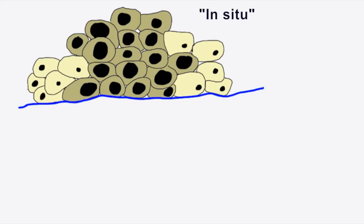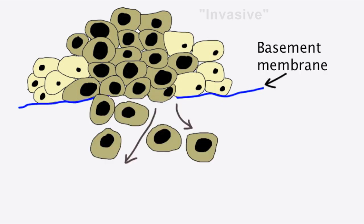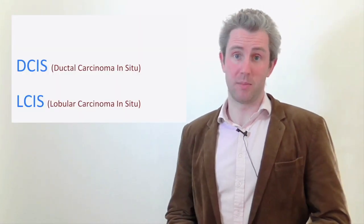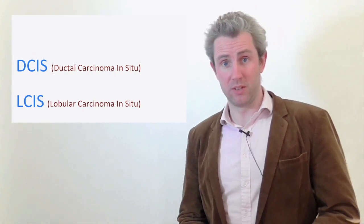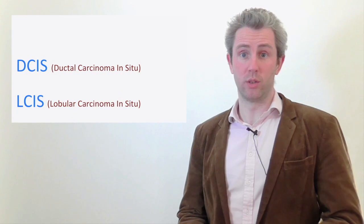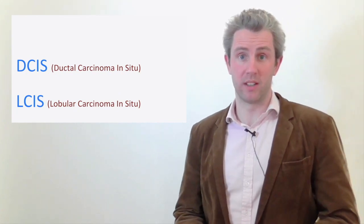After biopsy, the malignant lesion can either be in situ or invasive. An in situ carcinoma is contained within an intact epithelial basement membrane. An invasive carcinoma means that the cancer cells have gone beyond the basement membrane and therefore have the potential to get into the lymphatics and vasculature. The in situ carcinomas can be divided up into ductal and lobular subtypes. Ductal carcinoma in situ, or DCIS, is a clonal proliferation of ductal luminal cells that accumulate into the lumen of the duct.